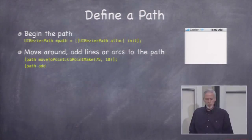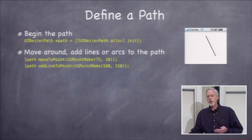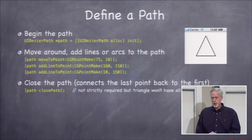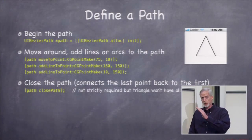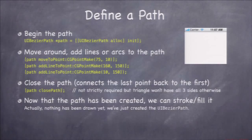To define a path — say a triangle with UIBezierPath — you alloc-init a UIBezierPath, move to the starting point at 75, 10, add a line to 160, 150, add another line to 10, 150, and then close the path with closePath, which draws a line back to where you started. You have a triangle. As you make all those calls, nothing is actually happening on screen — the screen is blank. All you're doing is building up the path in the UIBezierPath object.